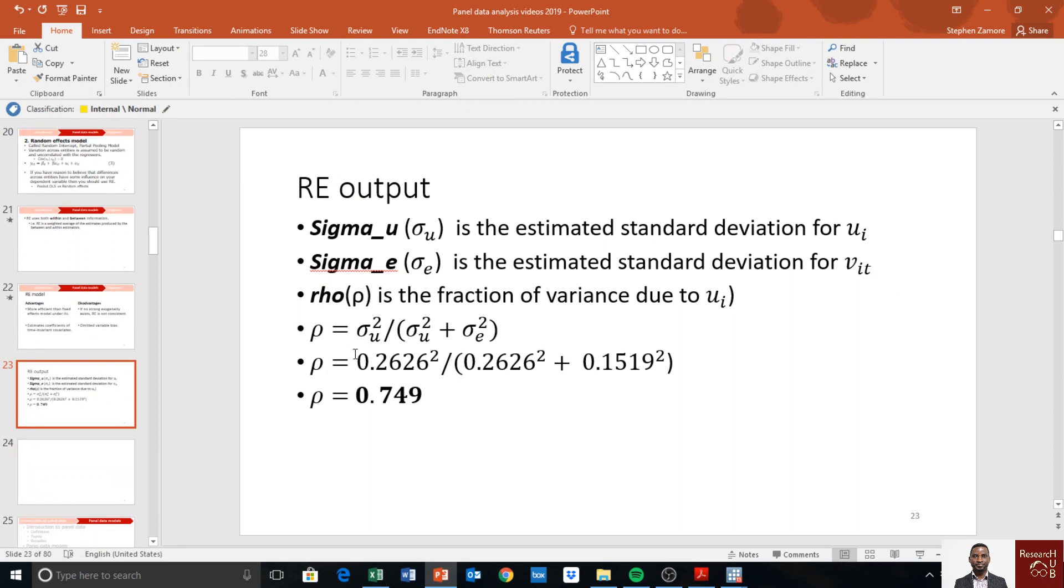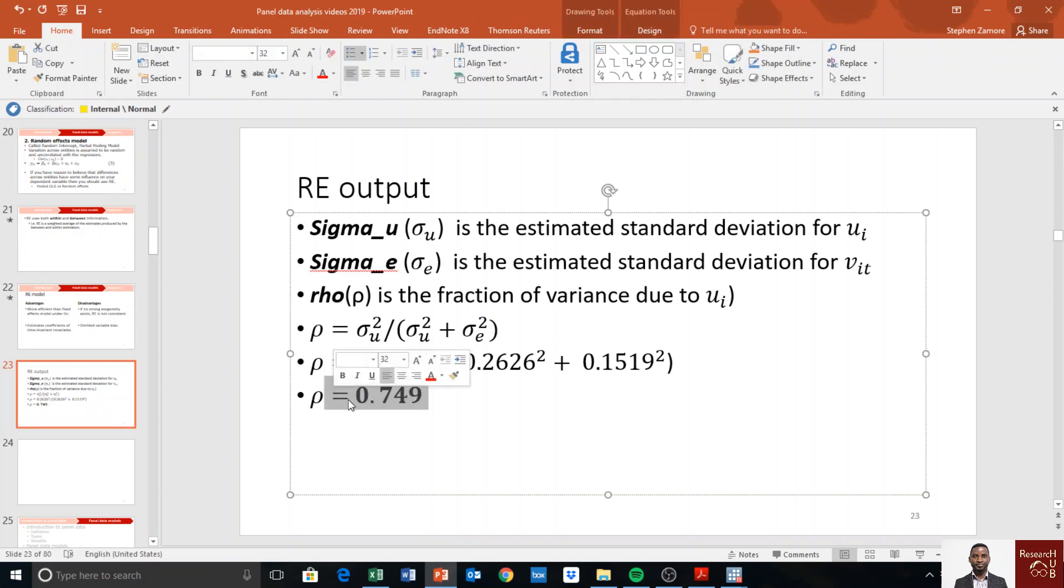So rho is computed as you take the variance of each of these, ui variance of ui and vit, and then you take the sum of it and then you take that component of the ui and then divide it by the total, so you end up with the value like this.